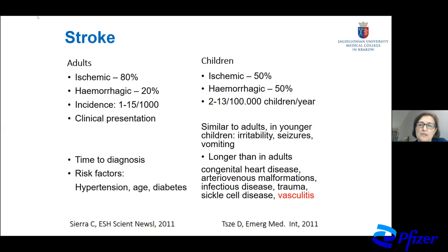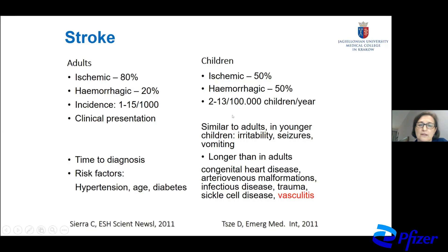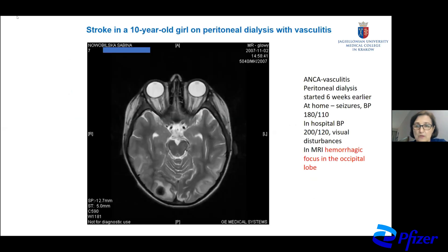Because we are not so afraid of stroke during childhood, the time to diagnosis is longer than in adults. We mostly expect stroke in children with congenital heart diseases or after trauma. But we should remember that in secondary forms of glomerulonephritis, like lupus or vasculitis, we have also such complications.